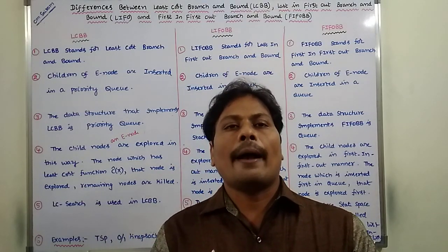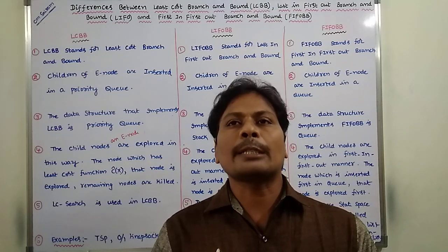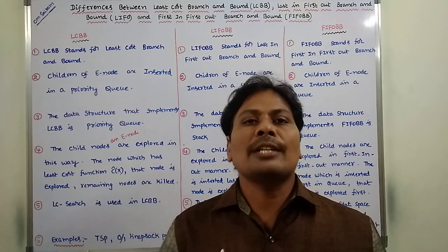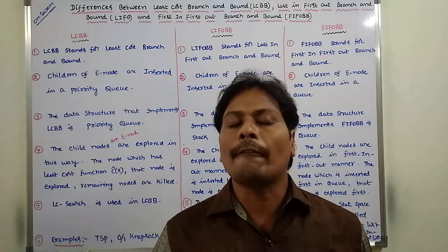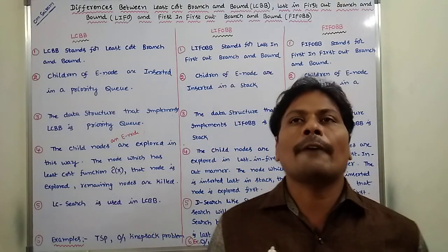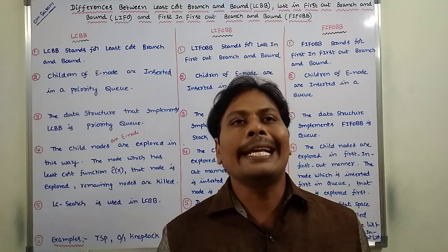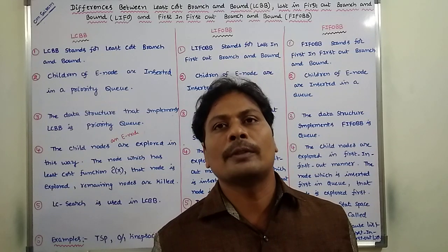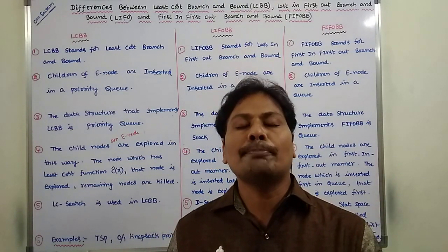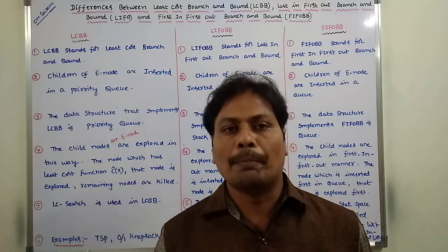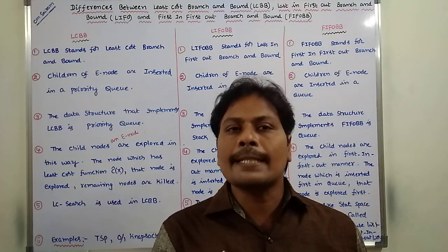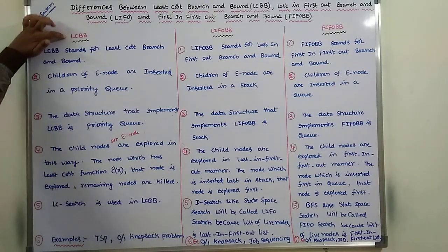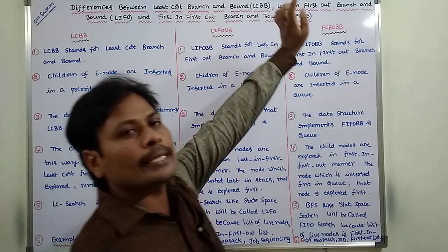Hi friends, today I am giving a lecture on differences between LCBB, FIFOBB, and LIFOBB in branch and bound in design and analysis of algorithms. There are three types of branch and bound techniques: first one is least cost branch and bound, second one is last in first out branch and bound, and third one is first in first out branch and bound.